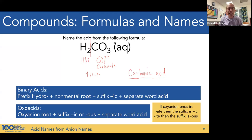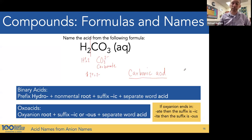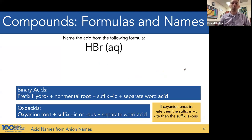To summarize: identify the acid by the hydrogen and the aqueous symbol. Separate and identify the anion. If it's an oxoanion, -ate or -ite become -ic or -ous respectively. Hydro goes with binary acids; no hydro with oxoacids. Always end with the word acid.